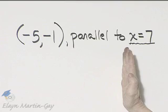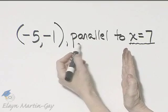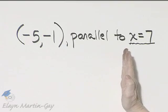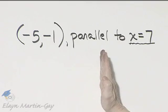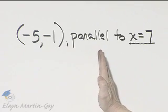So we have a vertical line, and I want a line parallel to a vertical line. So what kind of line is parallel to a vertical line? A vertical line is parallel to a vertical line.